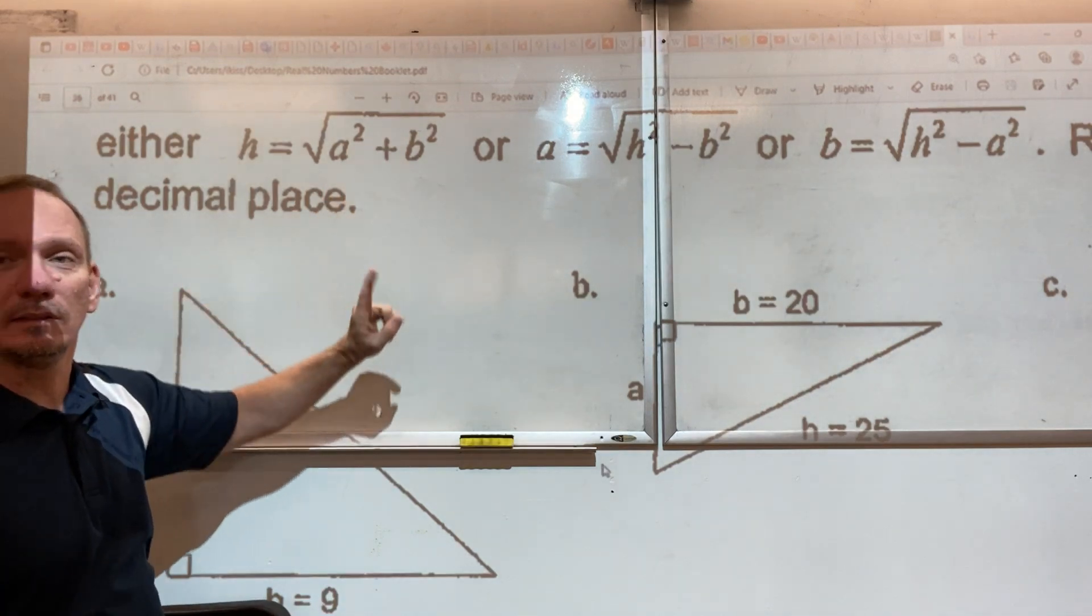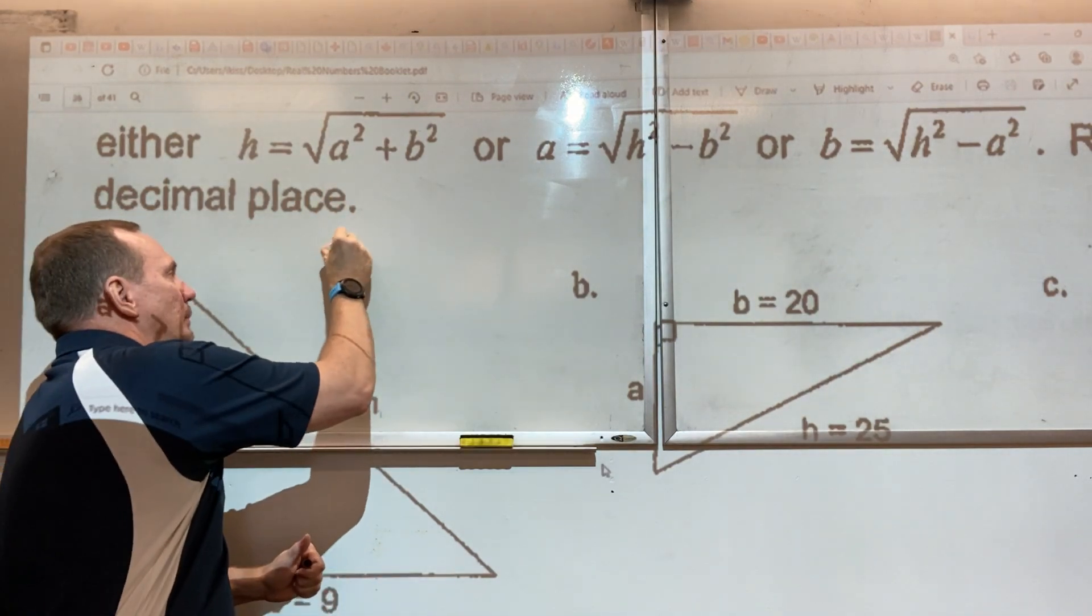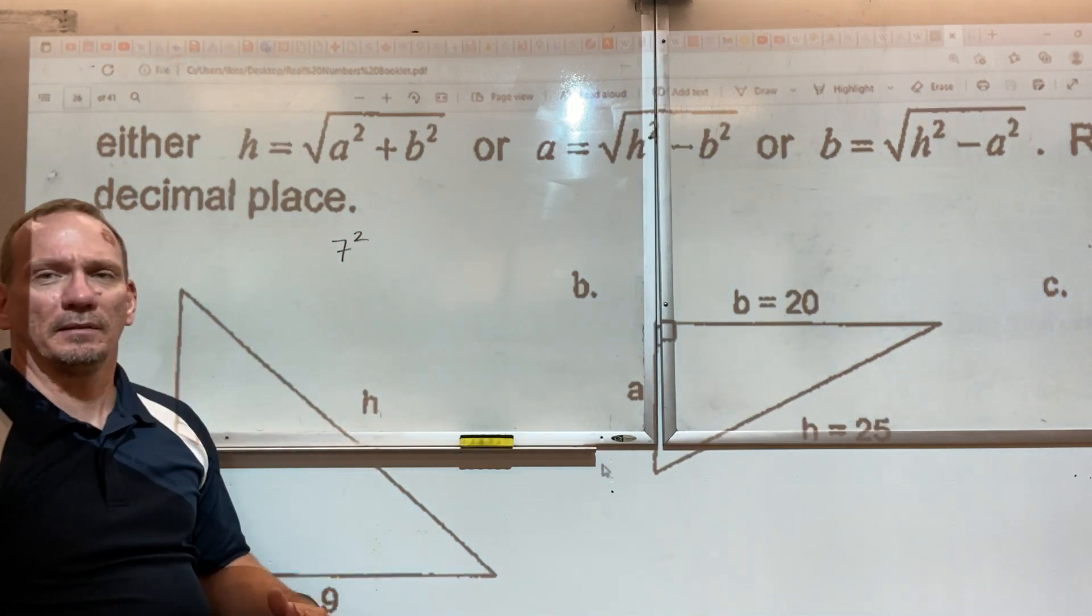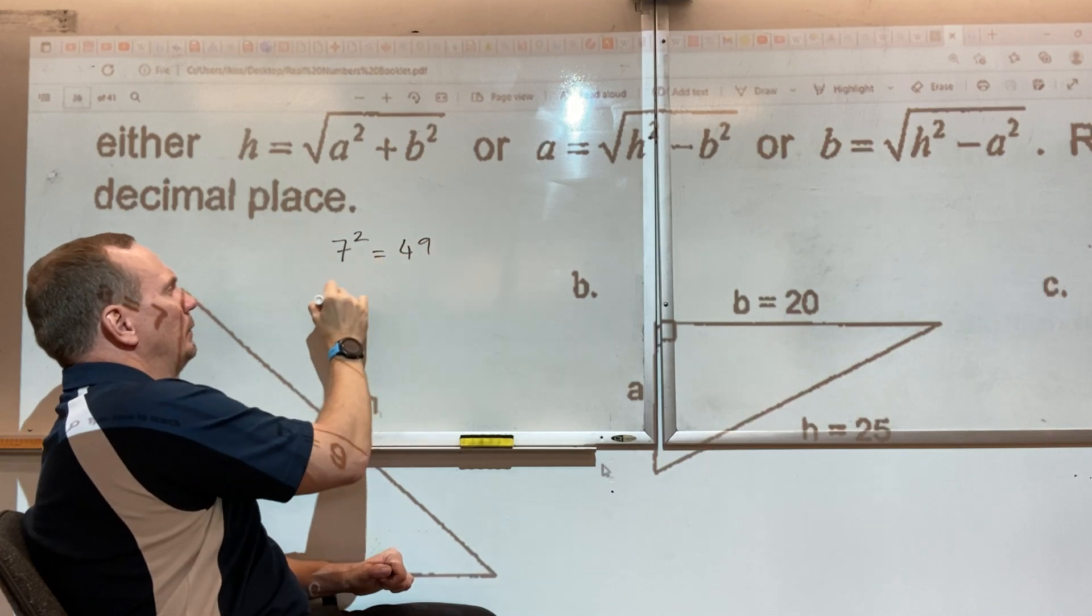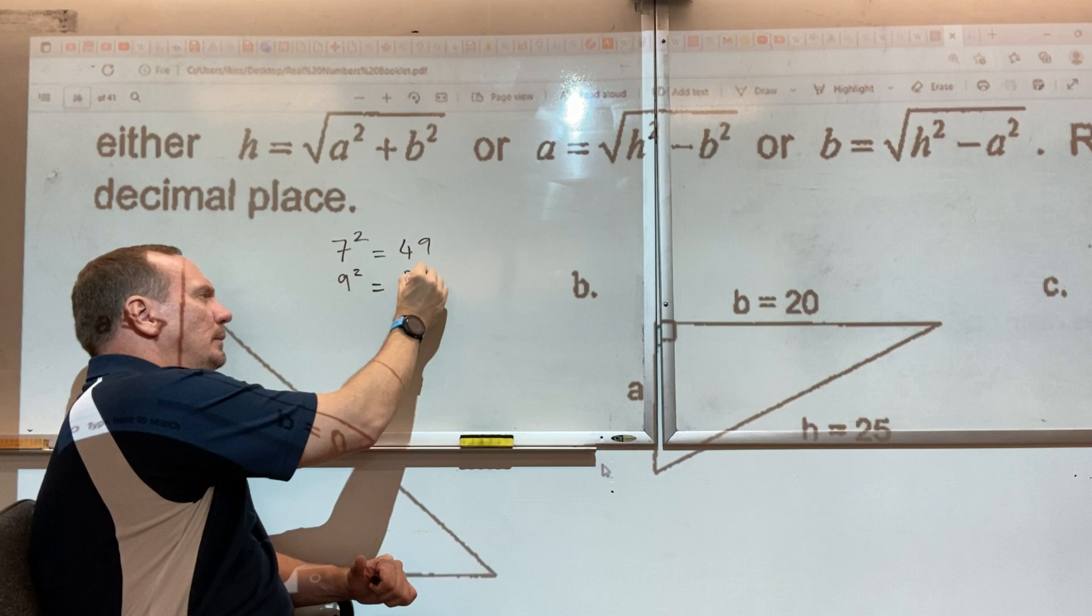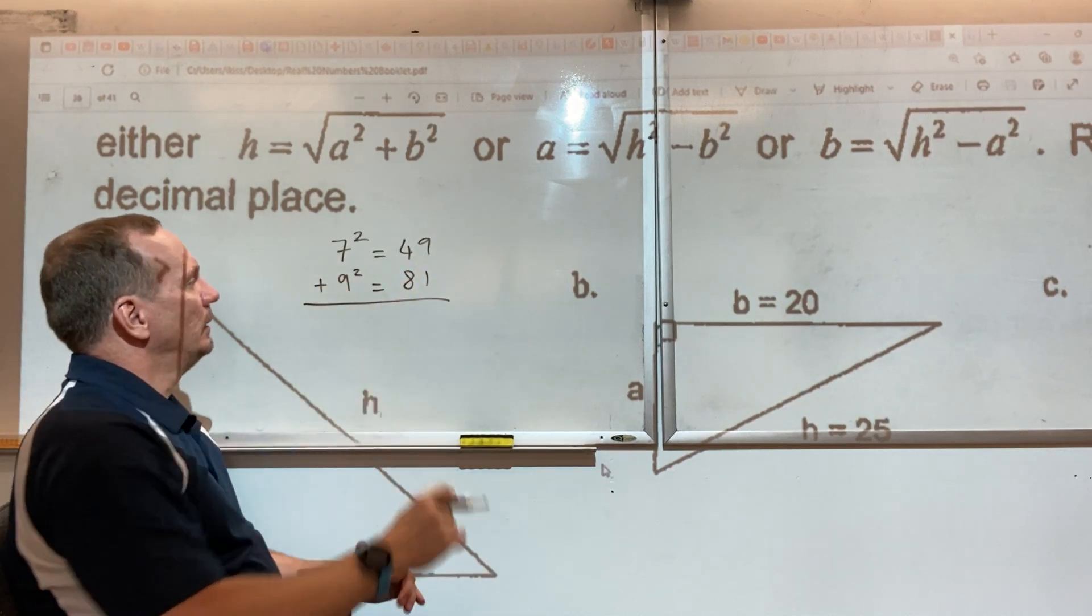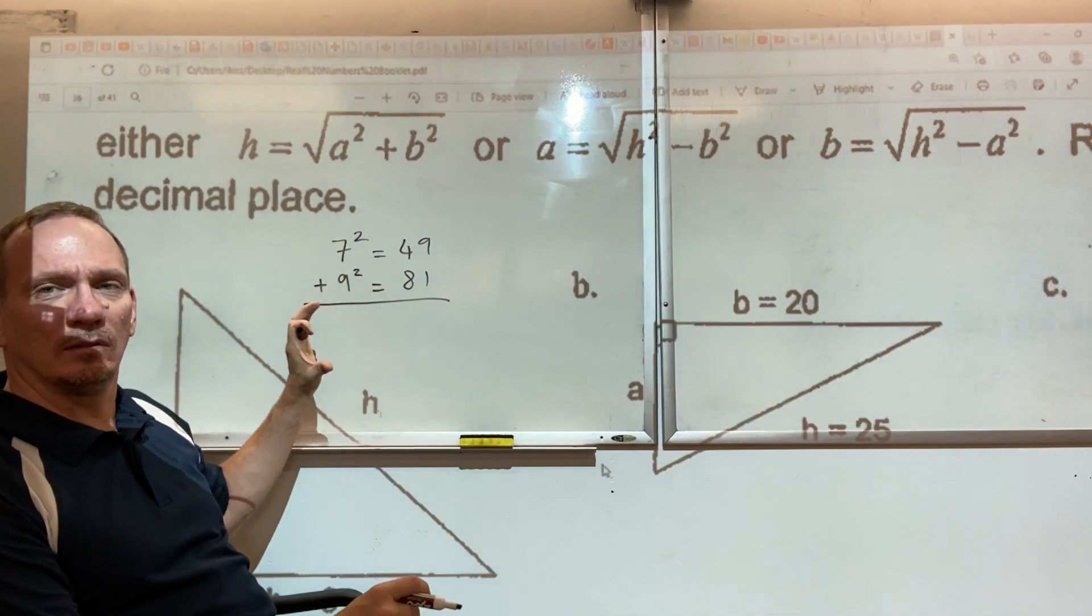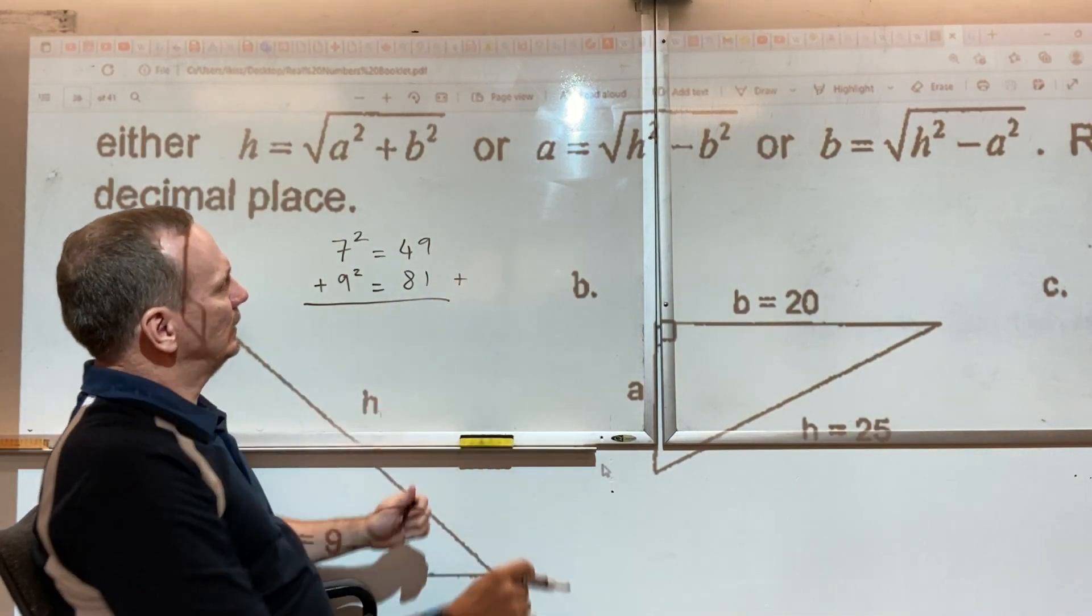What this formula says is the following: Take one of the numbers, 7, and then square it, and then write it down. Take the length of the other side, that was 9, square that number, and write it down. Then you have to add, you have to calculate the sum of the squares, that's what this is called. So I'm going to write the plus symbol there as well.